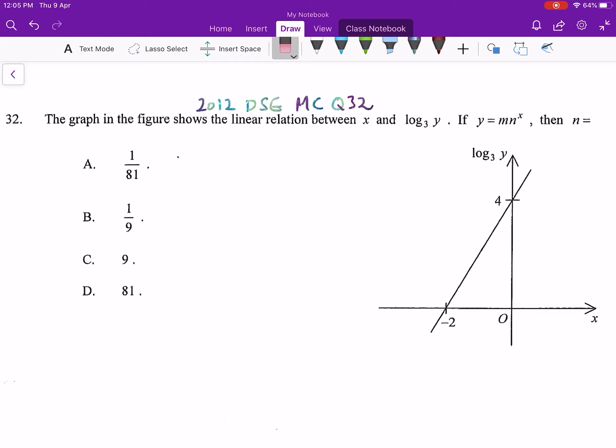We have a few methods. We'll introduce a method in the MC questions that can make it easier. This is called the point transformation. How do we do this question? First of all, take a look here. In this coordinate system, the y value is log₃y and the x value is just x.